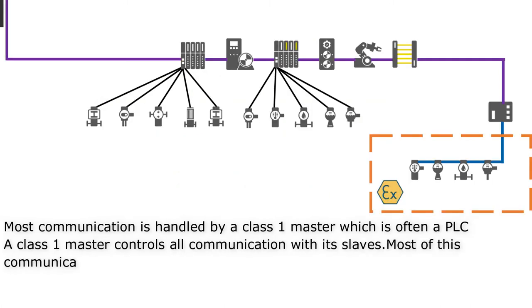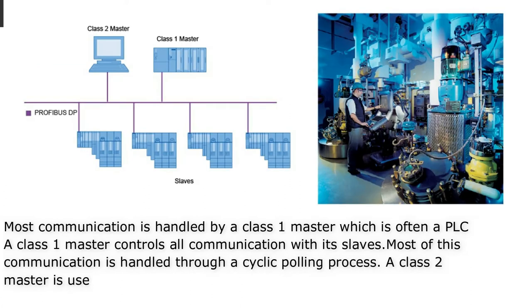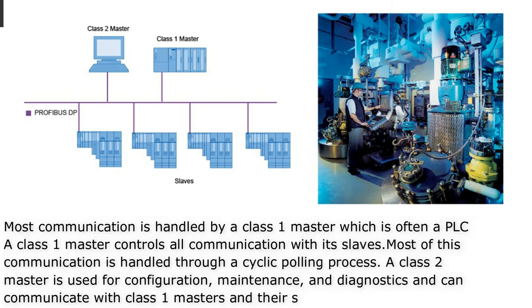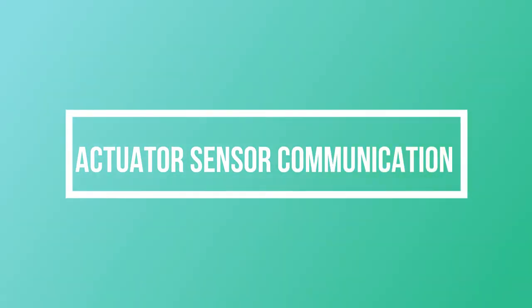Most of this communication is handled through a cyclic polling process. A class 2 master is used for configuration, maintenance, and diagnostics, and can communicate with class 1 masters and their slaves.